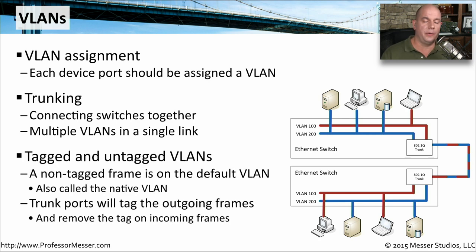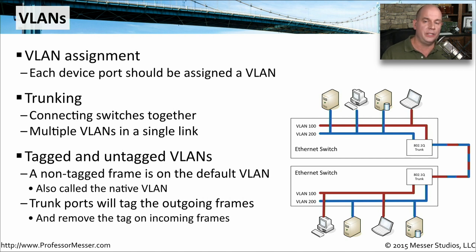The 802.1Q trunk configuration is where we define what information is going to be tagged and sent over that trunk. If there is a native VLAN on these switches, that information can traverse the trunk link without having tags added to any of those frames. If it's VLAN traffic, a tag is added to the frame on the way out, and when it's received by the other switch the tag is removed and the frame is placed on the proper VLAN.